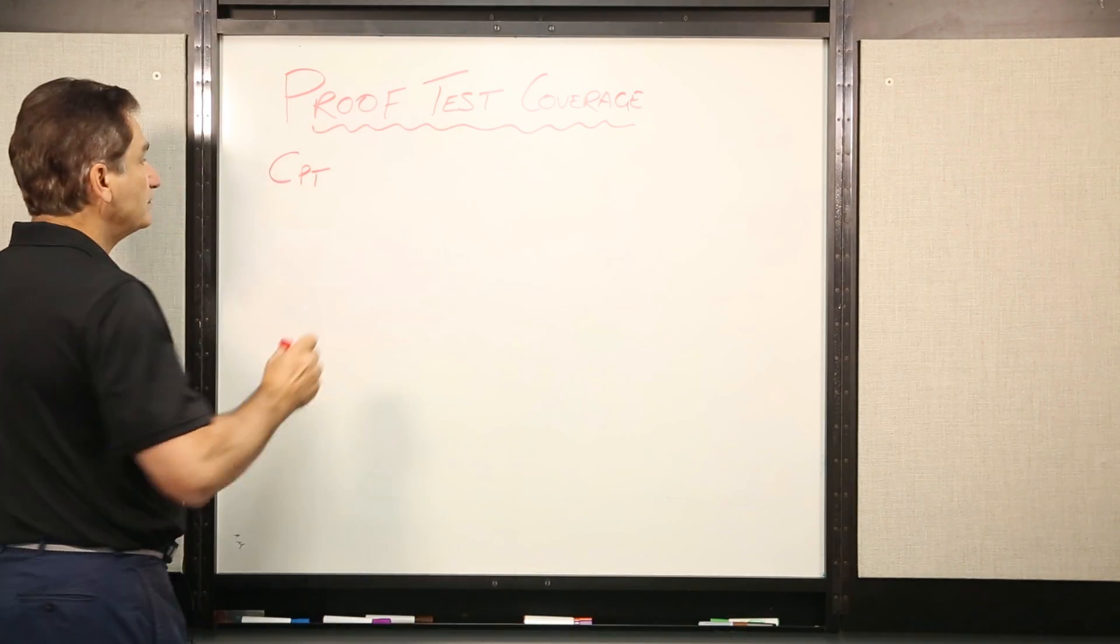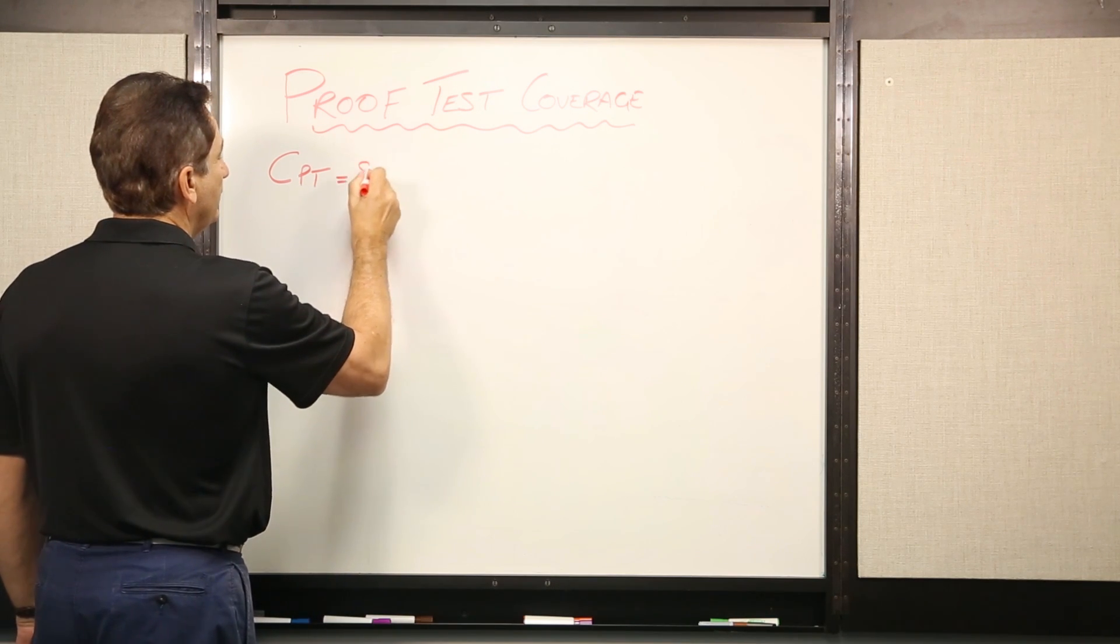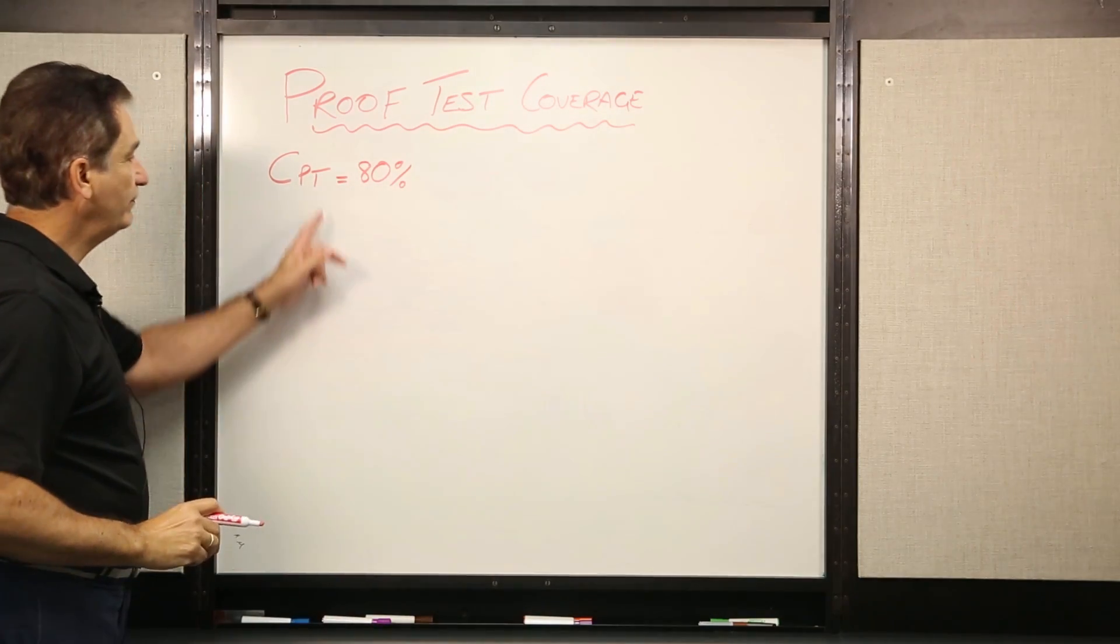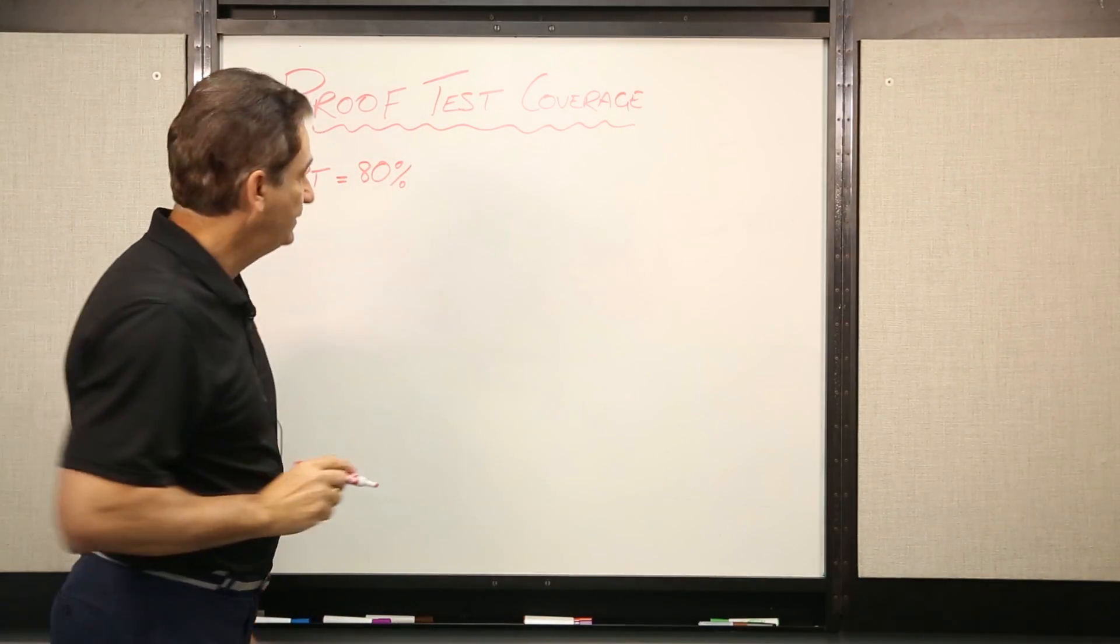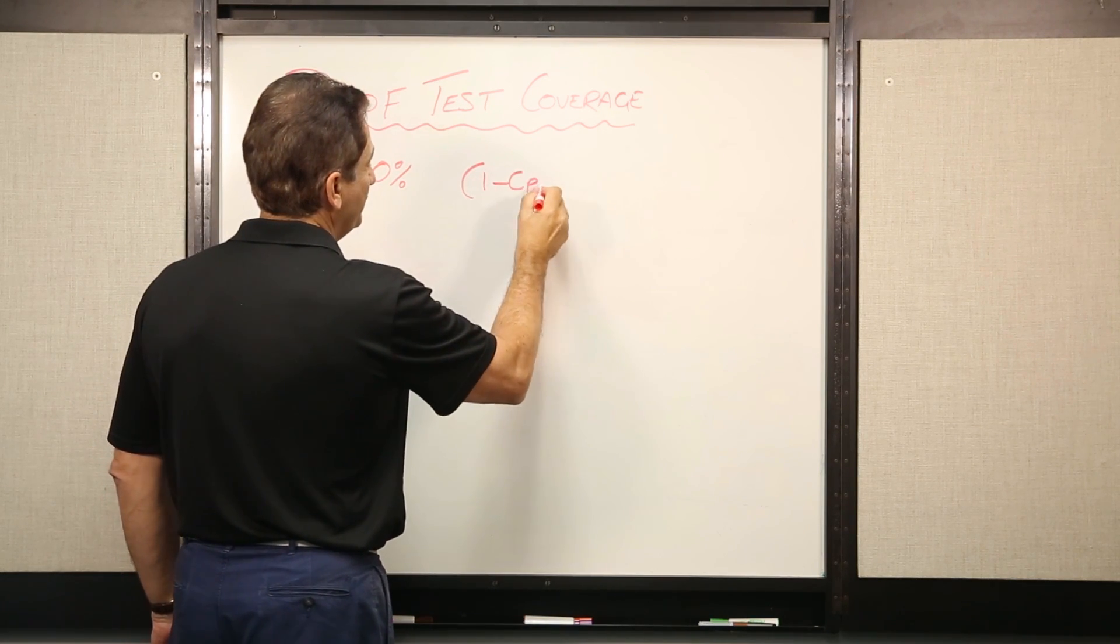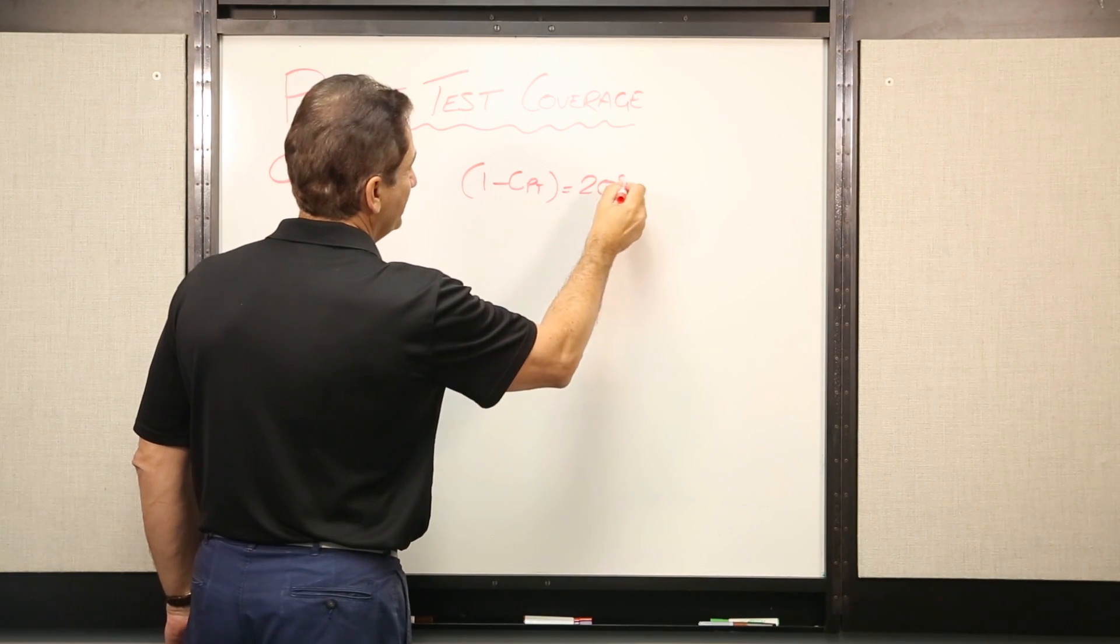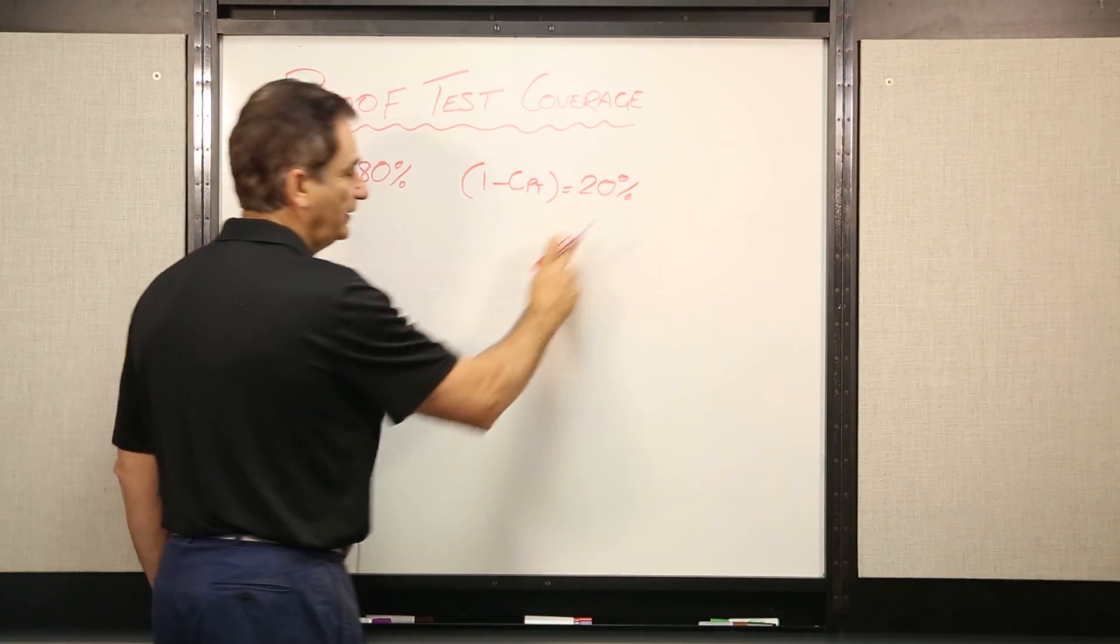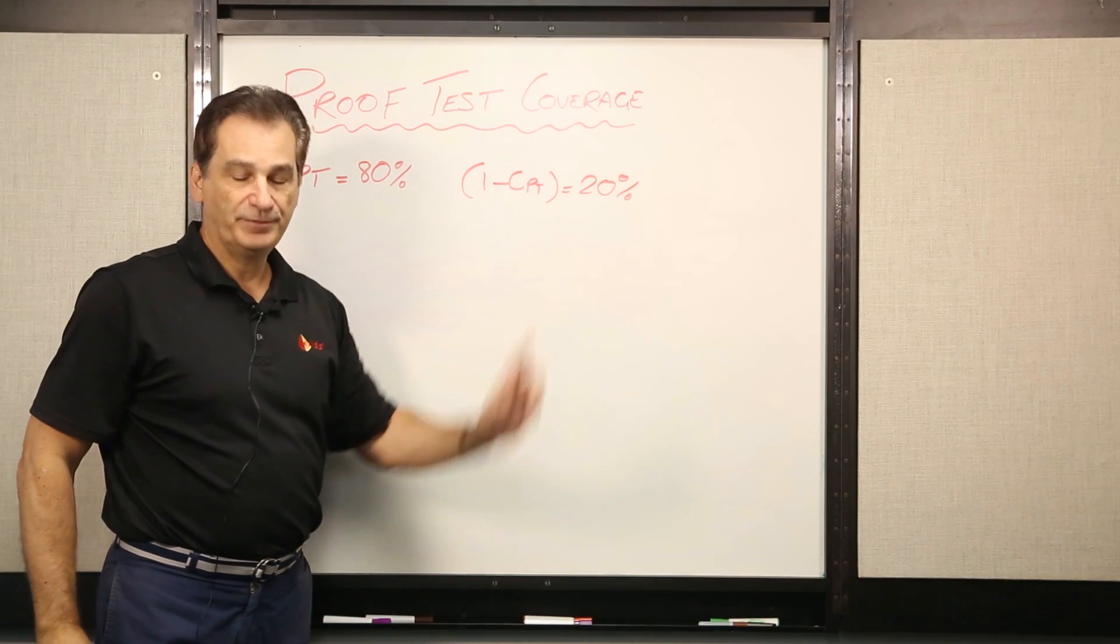So let's assume that our CPT equals 80%. So we can find 80%. But then it means that 1 minus CPT is 20%. So this now means that every time we do a proof test, we're not going to be able to find 20% of our faults.